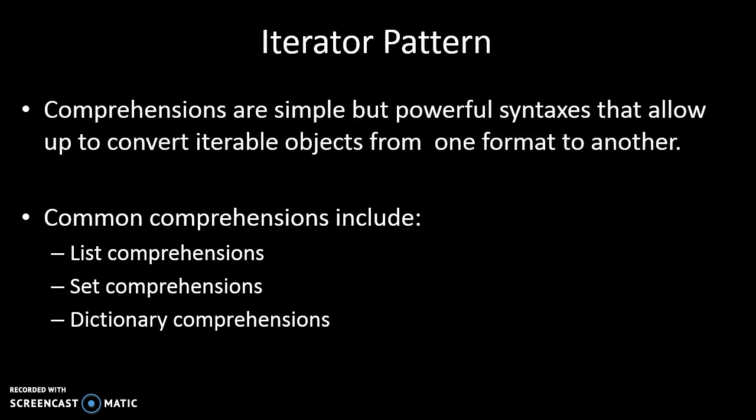Something that goes hand in hand with the iterator class is what are called comprehensions. Comprehensions are very short, simple syntaxes that allow you to convert objects from one format to another. Common examples would be list comprehensions, set comprehensions, and dictionary comprehensions.